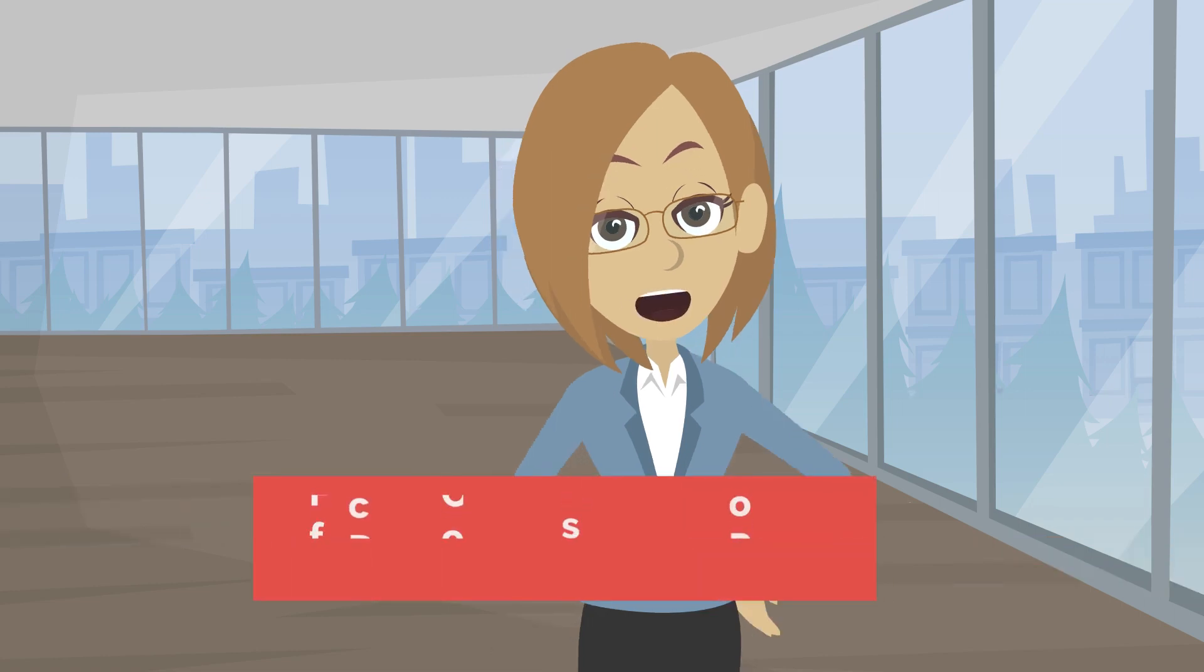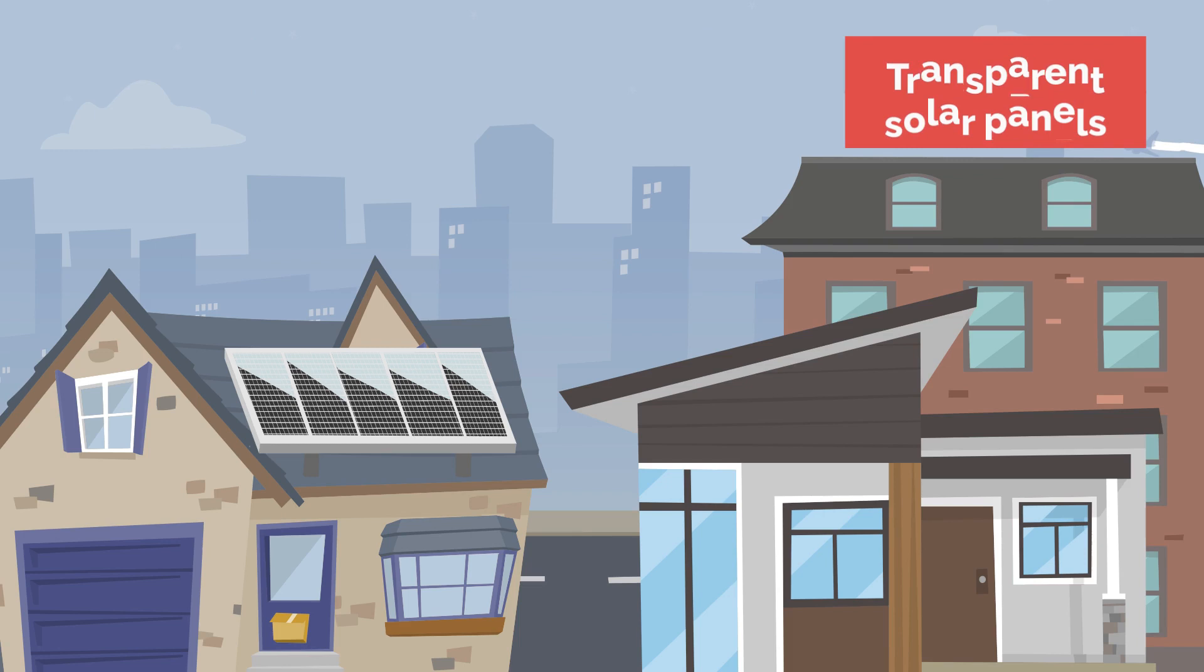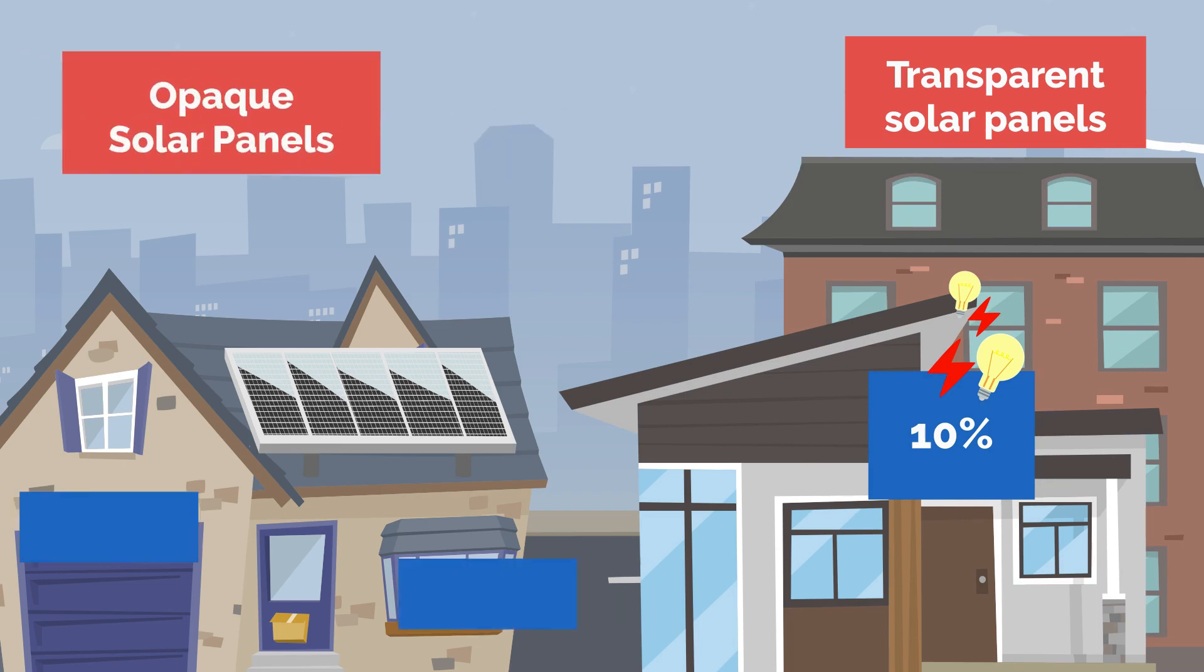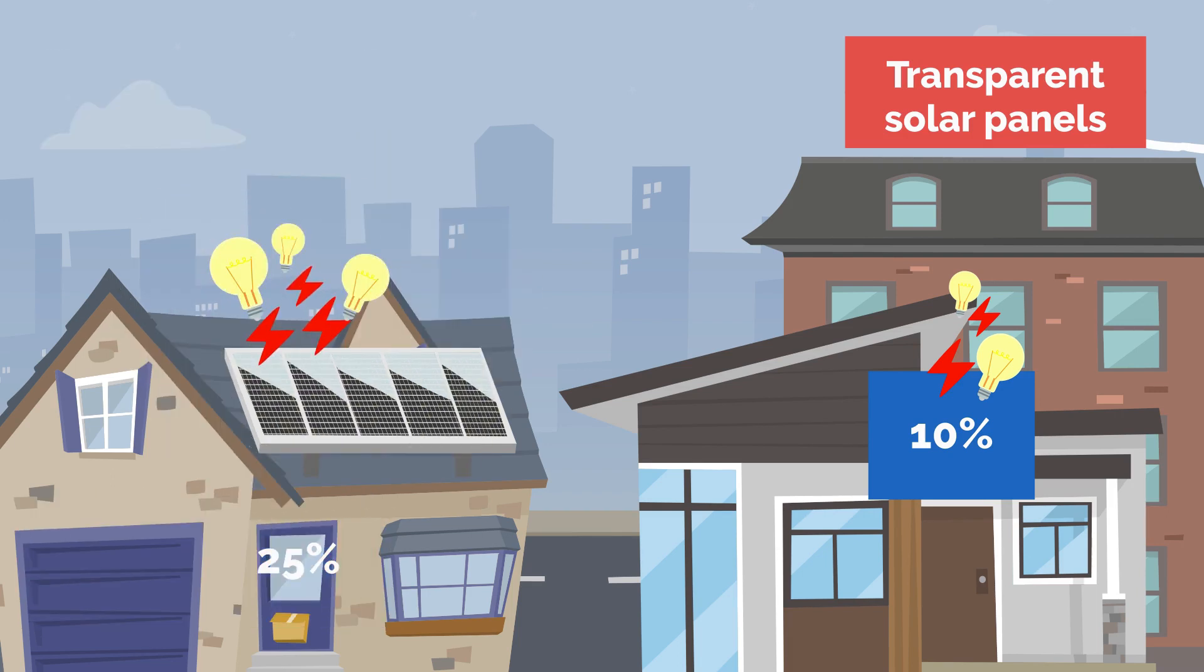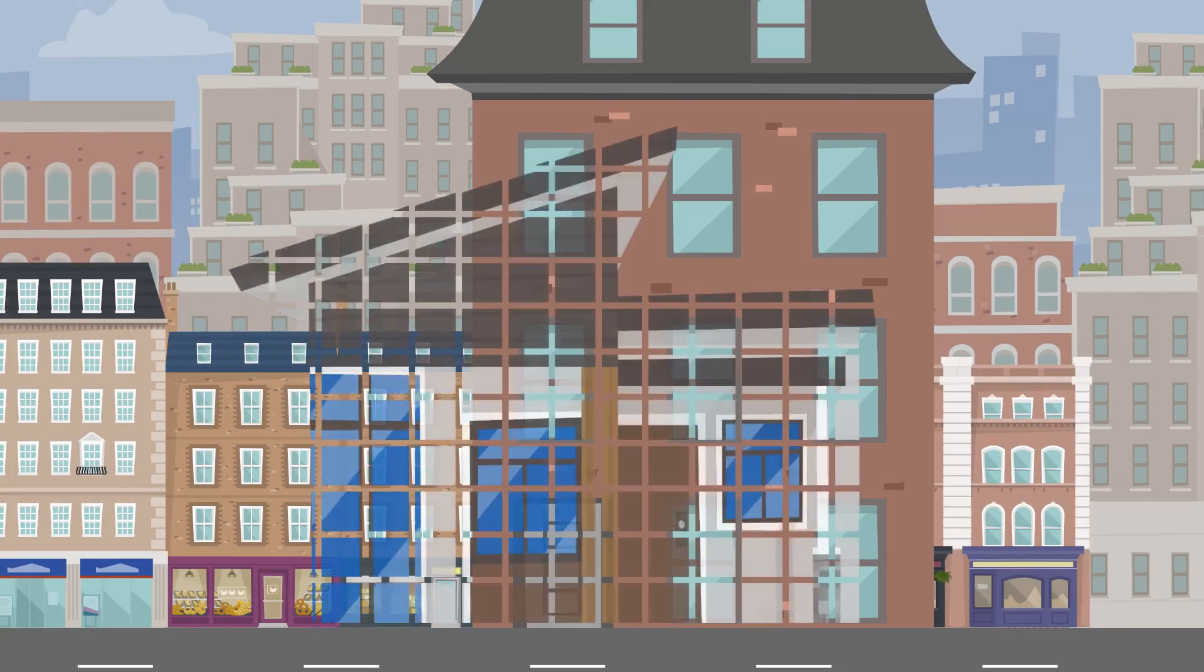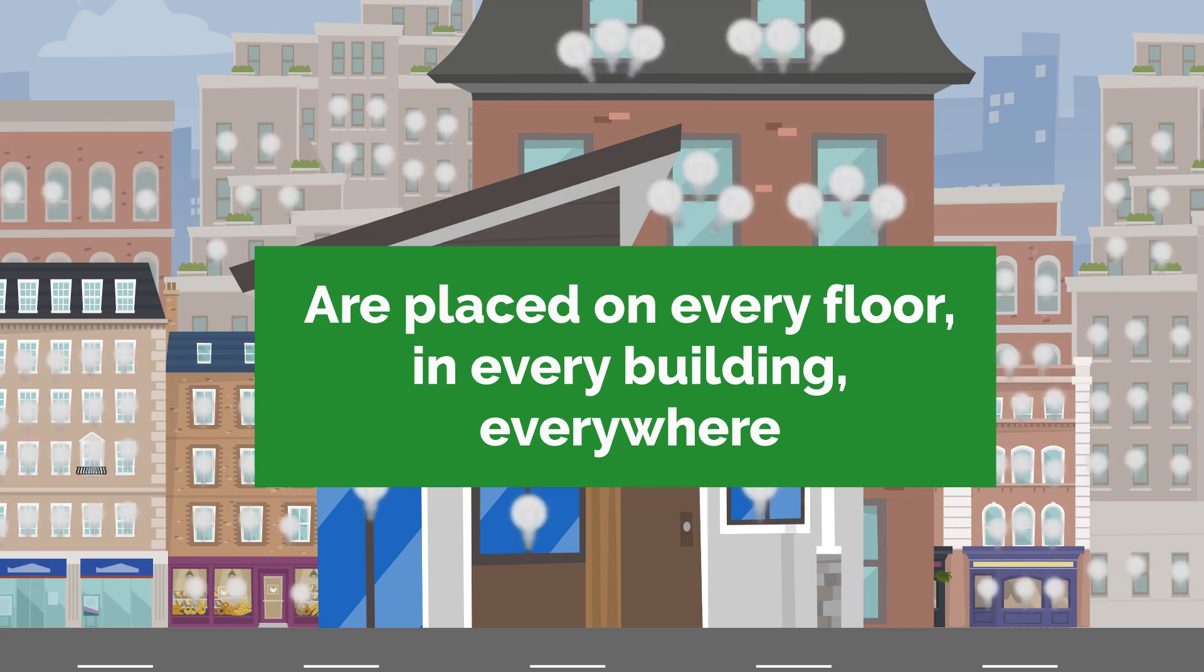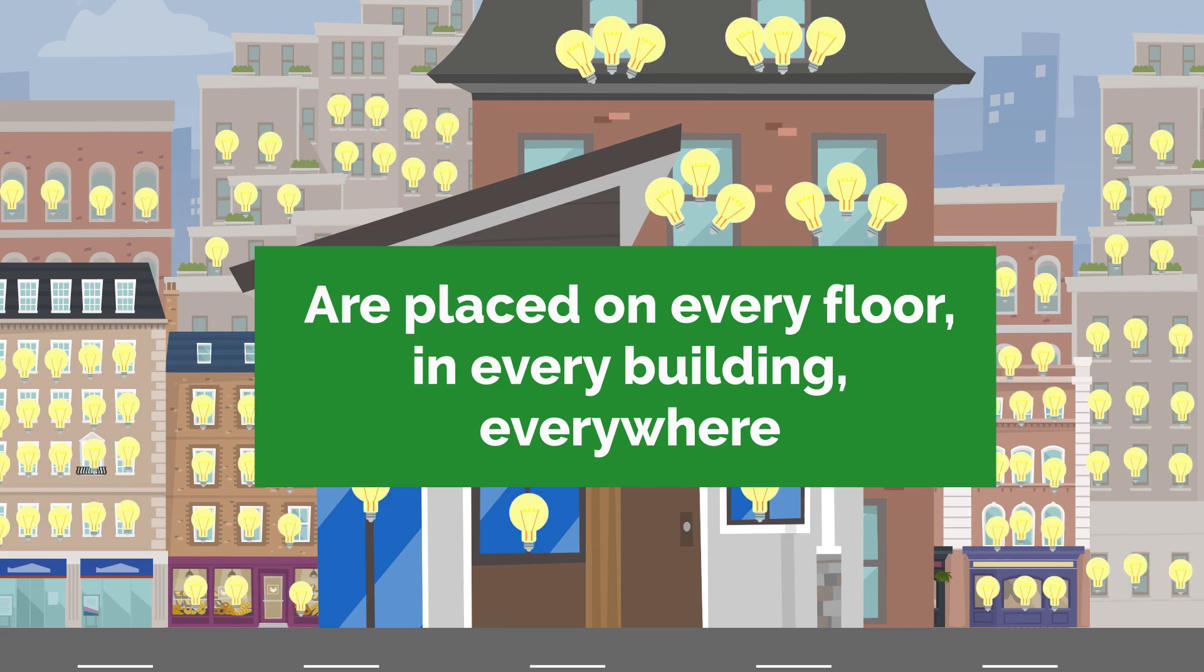Now, let's talk about the efficacy of transparent solar panels. Transparent solar panels have a conversion rate of 10% which may not seem like such a big number. Compared to the traditional opaque solar panels that produce electricity at the rate of 25%, transparent panels lag far behind. However, because these panels are placed on every floor, in every building, everywhere around, they would be able to generate as much energy as the traditional ones.